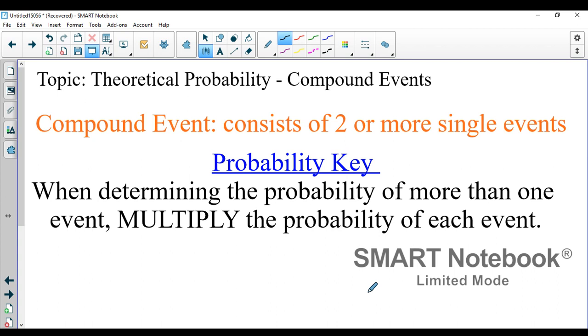Today's topic is compound probability. Go ahead and jot this down. Compound probability consists of two or more single events. When you're dealing with probability, the way that you determine the probability of multiple events is you find each probability individually and then you multiply them.